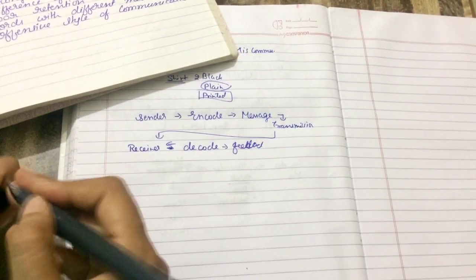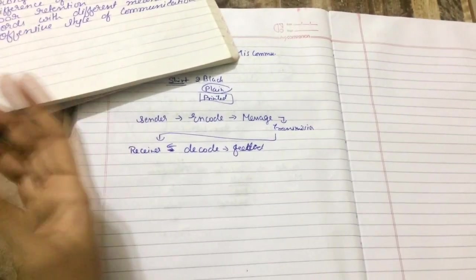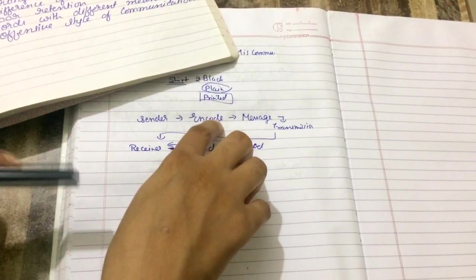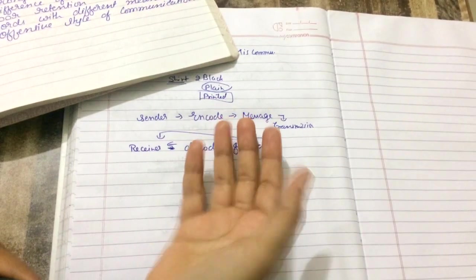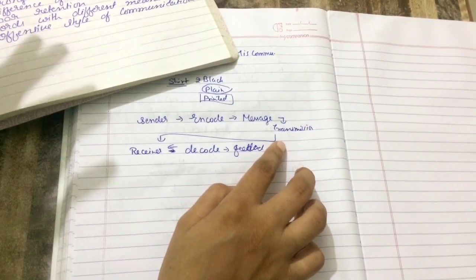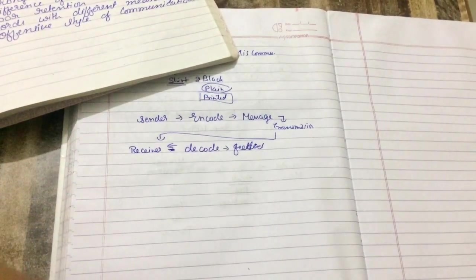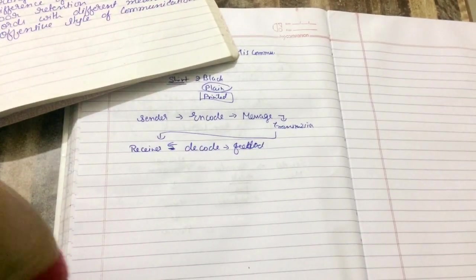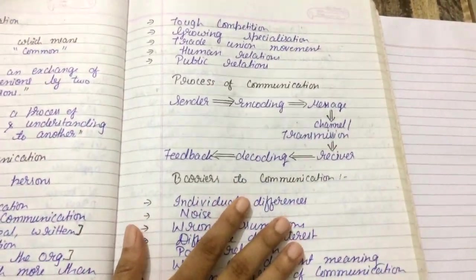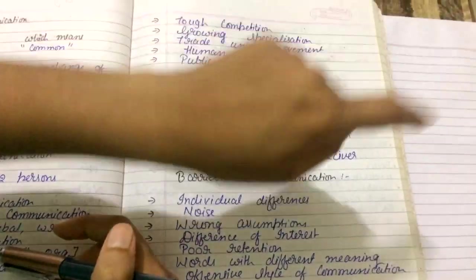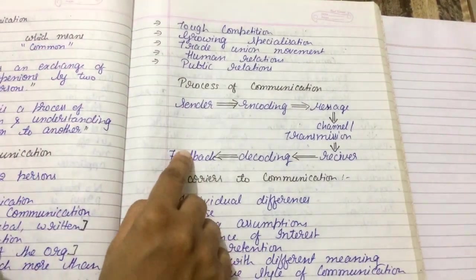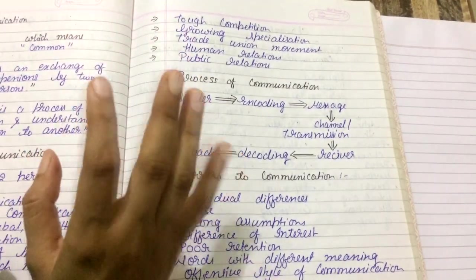For example, if I need to invite someone to a birthday party, I am the sender. I encode the message — whether I WhatsApp it, write a mail, call, or meet someone to invite them. The message is the invitation itself. Transmission is how I send it — verbal, non-verbal, or through a message. The receiver then decodes it, understands they are being invited, and gives feedback: 'I will come' or 'I'm sorry, I'm busy that day.' To remember: sender → encoding → message → transmission → receiver → decoding → feedback. When this chain is completed, communication is complete.